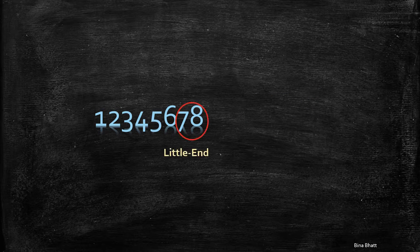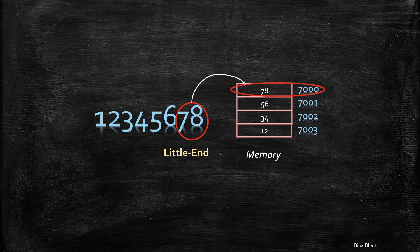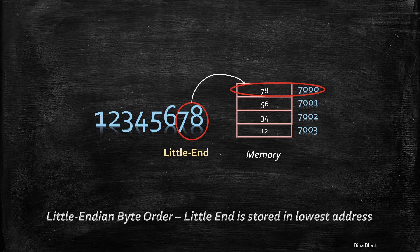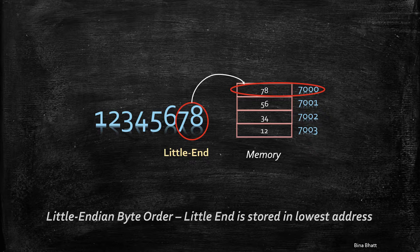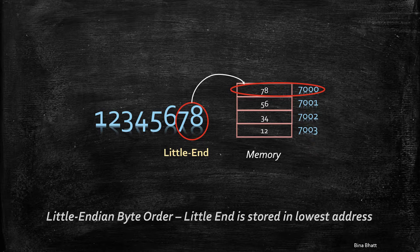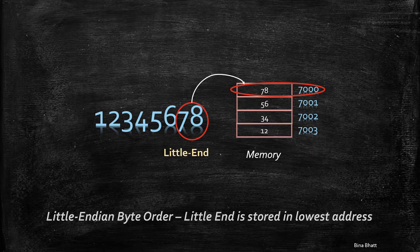Conversely, if we store the LSB or the little end first, then it is referred to as little endian byte order. Thus, processors can either be big endian or little endian in their architecture.